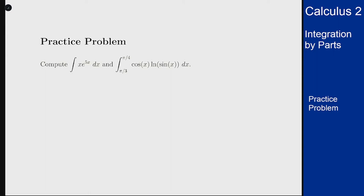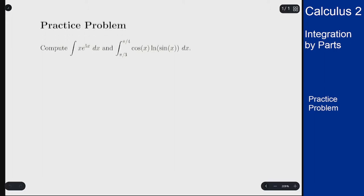In this example we want to solve two different integration problems that involve integration by parts, one that is indefinite, one that is a definite integral. So the first thing is we have integral of x e to the 5x dx as an indefinite integral. So this one we see a product of two functions, we see x times e to the 5x.